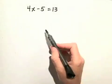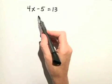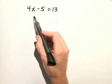For our next example, we'll solve a linear equation. We have 4x minus 5 is equal to 13. Remember, solving a linear equation just means isolating the variable on one side.